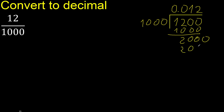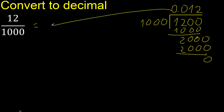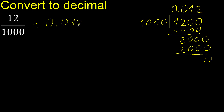1000 multiplied by 2 is exactly 2000. Subtract — 0. Therefore finish here. Finish.